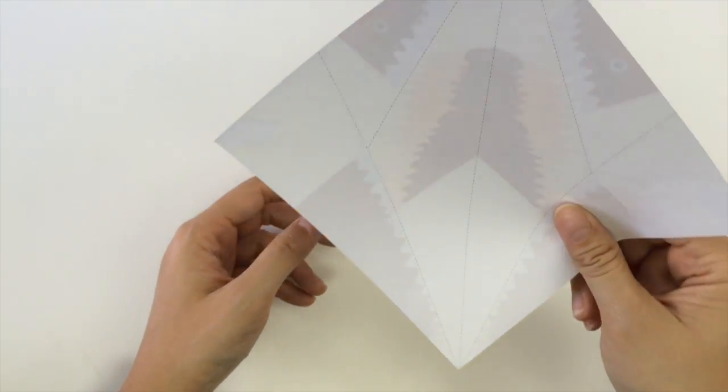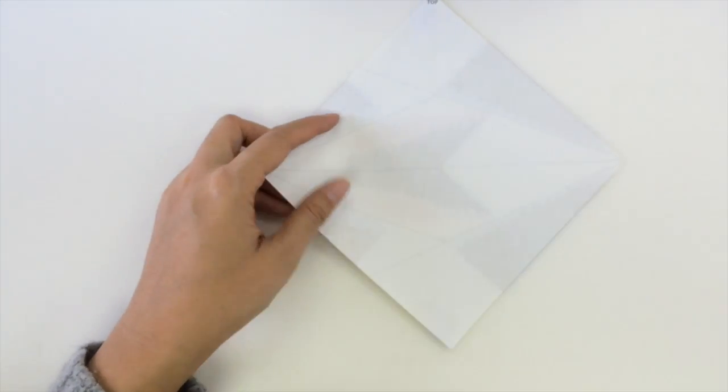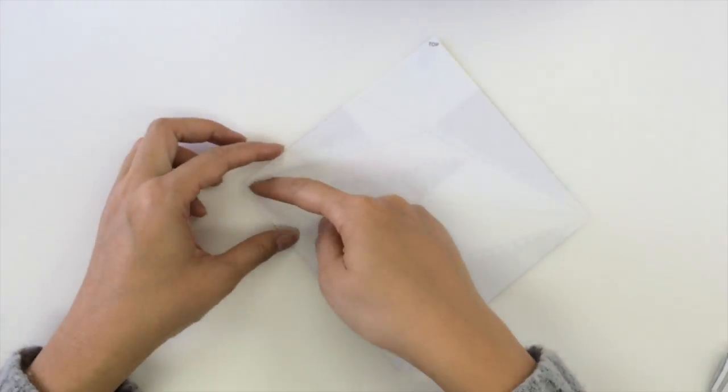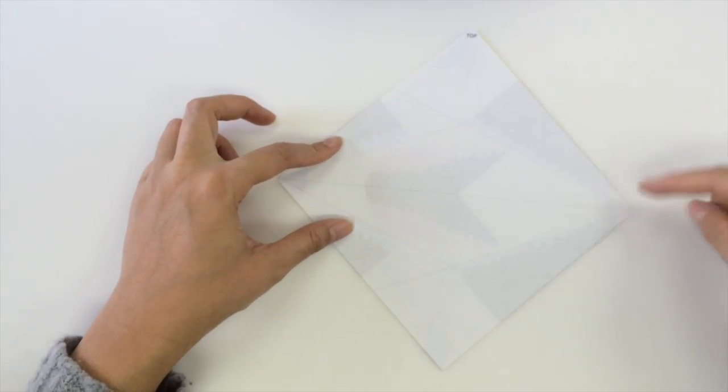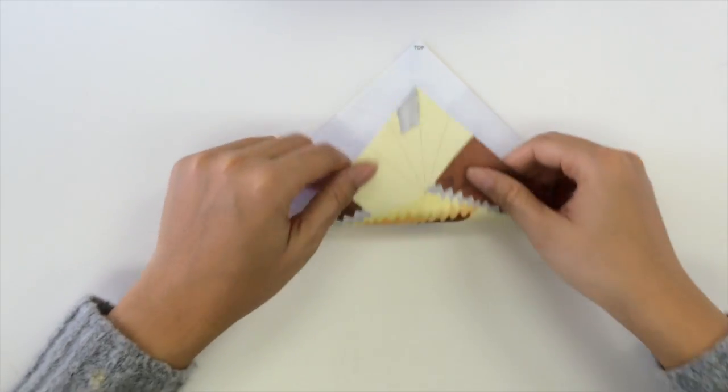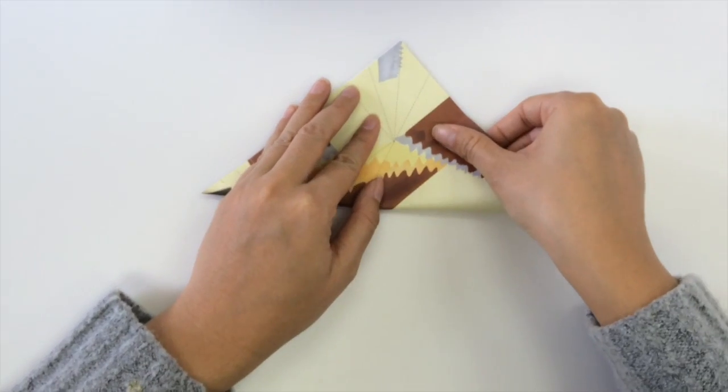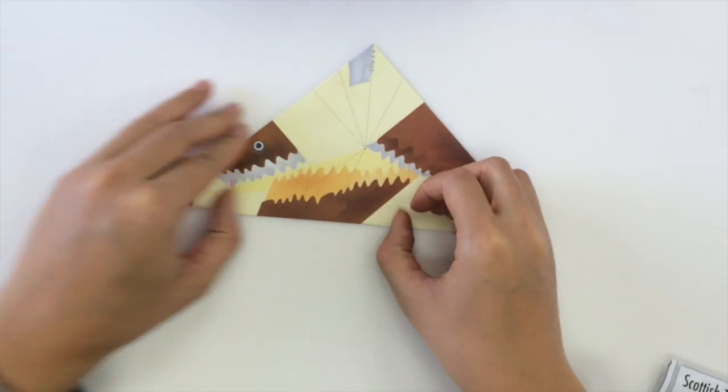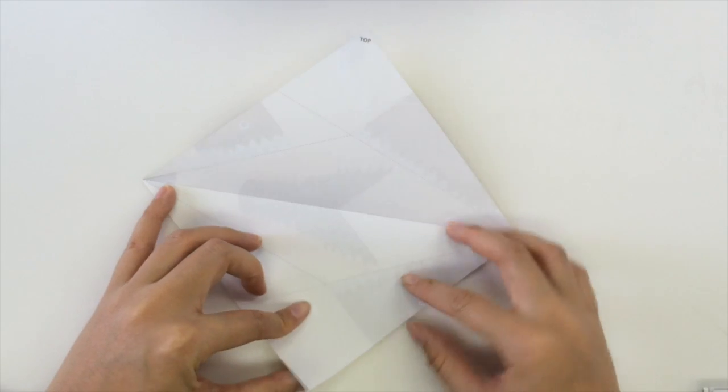We're going to turn it over so the top is facing up like this. We're going to fold it along the diagonal in the middle and crease it. Crease the middle line and open it back up.